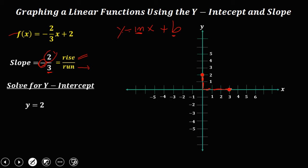Then another downward 2 — counting 1, 2. Then run 3 — counting 1, 2, 3. And this is the other coordinate. So therefore, this is the graph of this function.